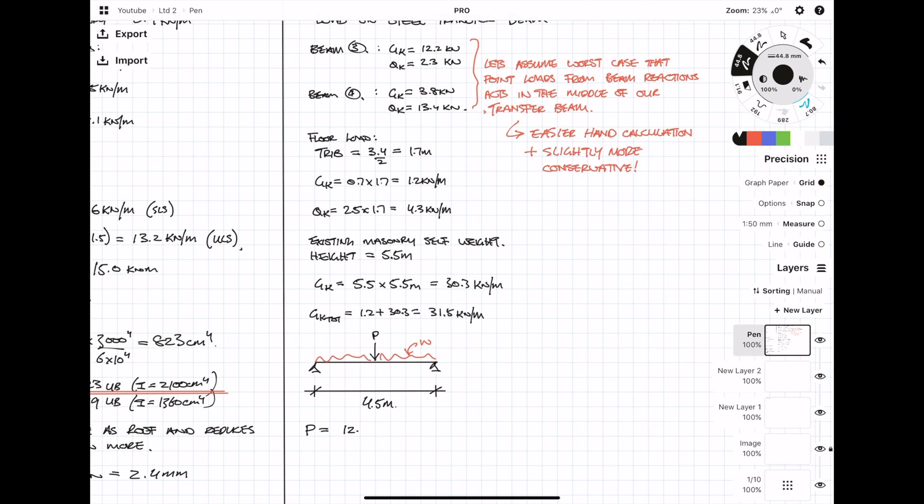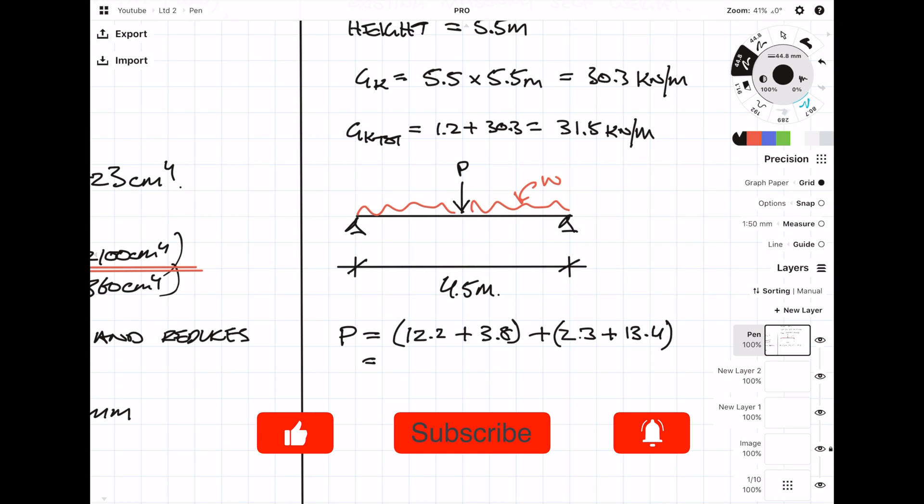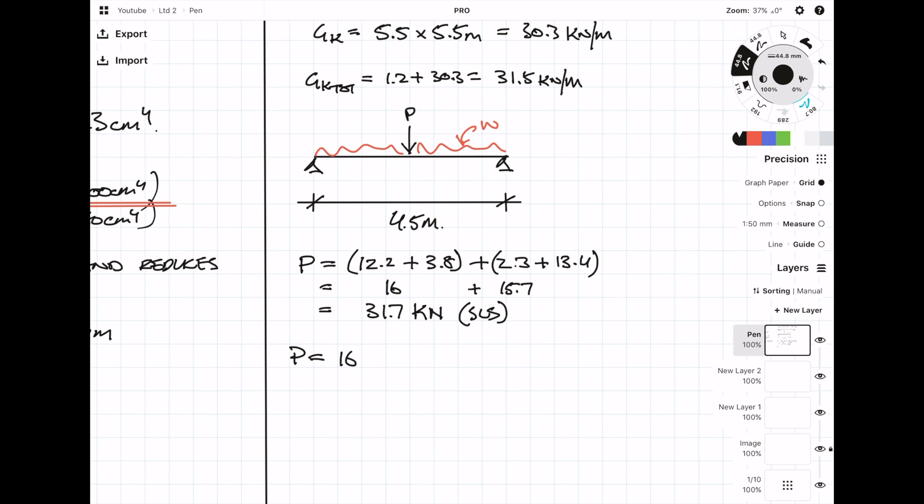First of all, we're going to combine the reaction forces together so that we get the total point load P. Then we're going to apply the Eurocode dead and live load factors to them.